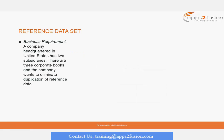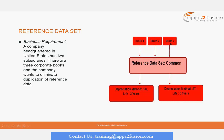Here's a use case. The business requirement is a company headquartered in the United States with two subsidiaries. There are three corporate books and the company wants to eliminate duplication of reference data — for example, they want the depreciation methods to be applicable to all subsidiaries. This means that if there are three corporate books, we would use the reference data set as Common.